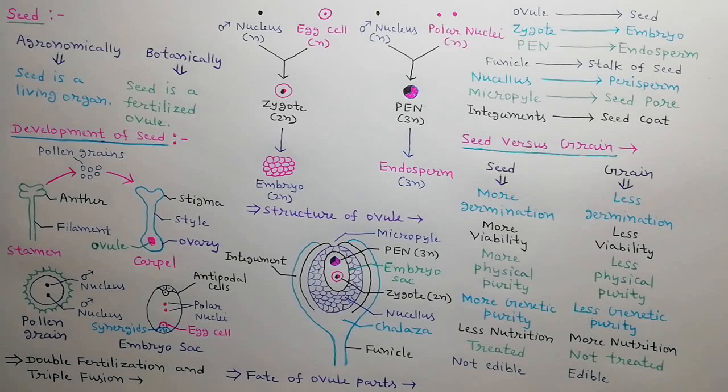Seed and grain show many differences. Such as seeds show high germination capacity while grains show less germinability. Seeds show more viability as compared to grains. Seeds are physically more pure than grains. Seeds are genetically more pure than grains. Grains give more nutrition as compared to seeds. Seeds are chemically treated hence unfit for human consumption while grains are non-treated hence they are edible.